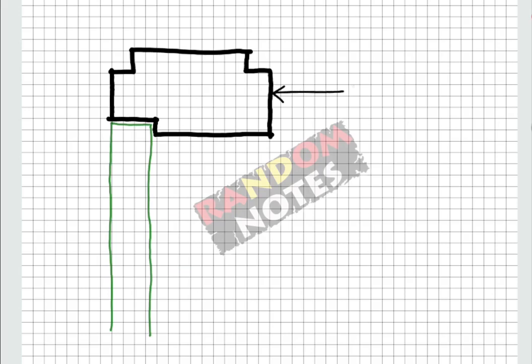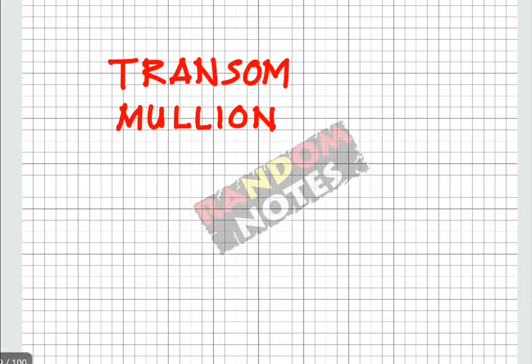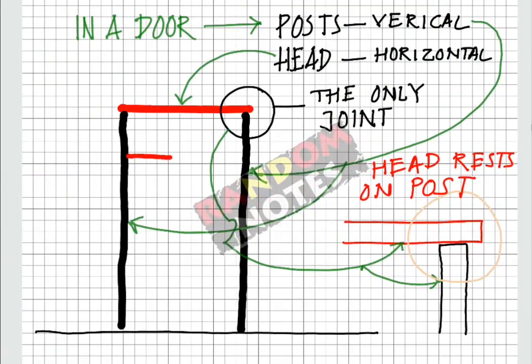This is the section through the head of an opening. Let us understand what are transom and mullion in a frame. Post, head, and sill make the periphery of a frame, but if you need divisions within a frame to have a fanlight or ventilator or a combination of fixed glass and side-hung window and similar such combinations, then transom and mullion help in that division. Transom is a horizontal member and mullion is a vertical member.